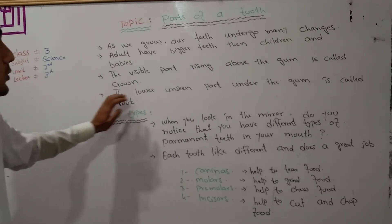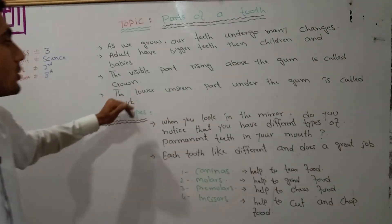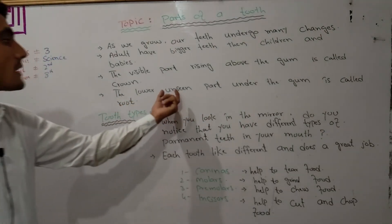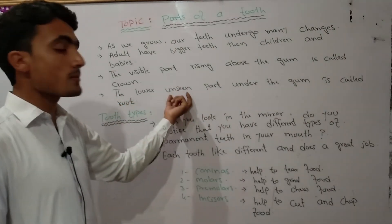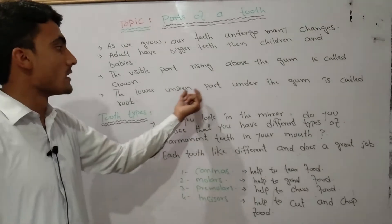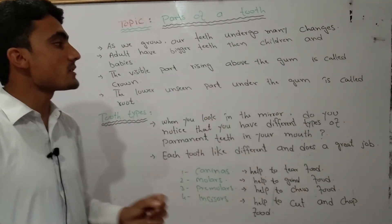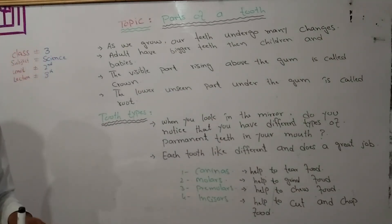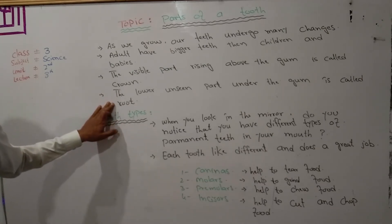The lower unseen part under the gum is called the root. It is not visible like the crown. The part below the gum is called the root.